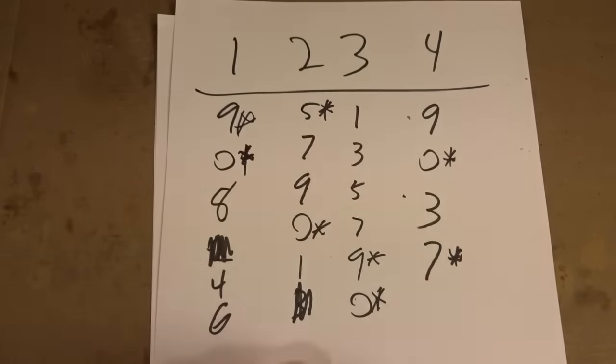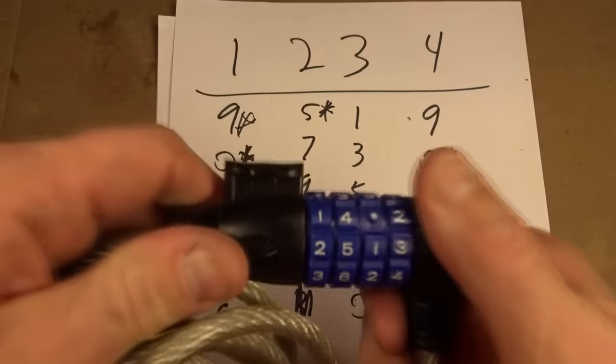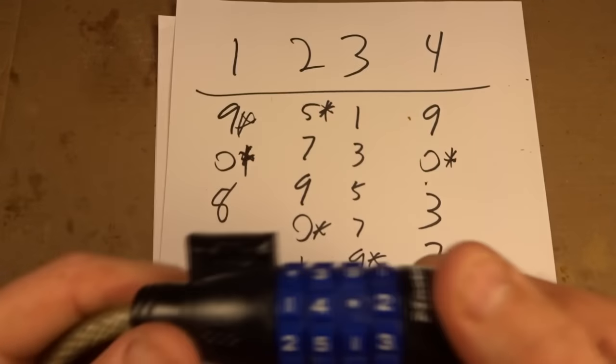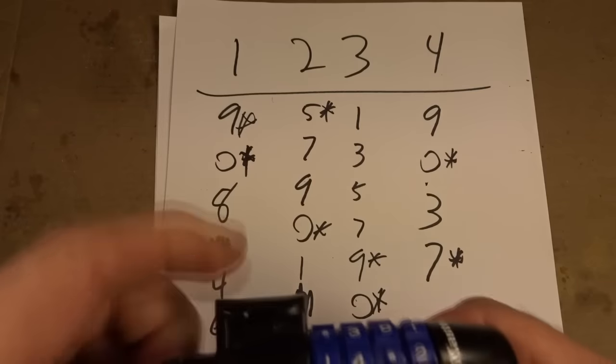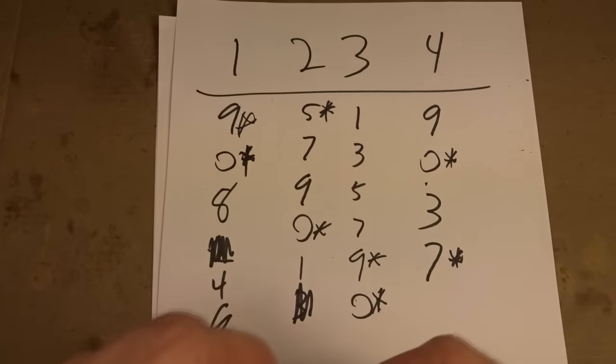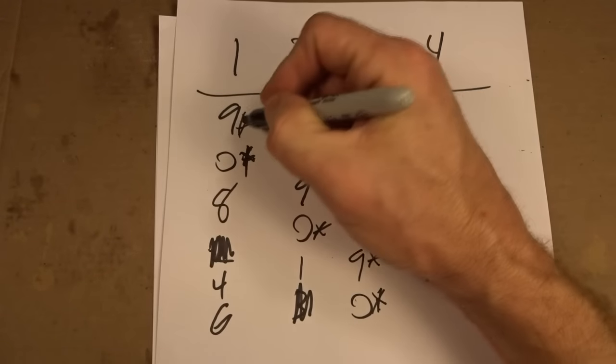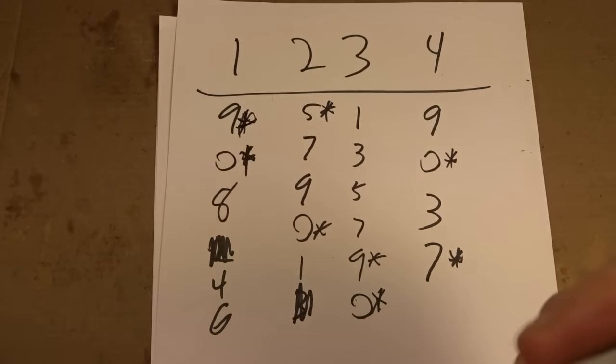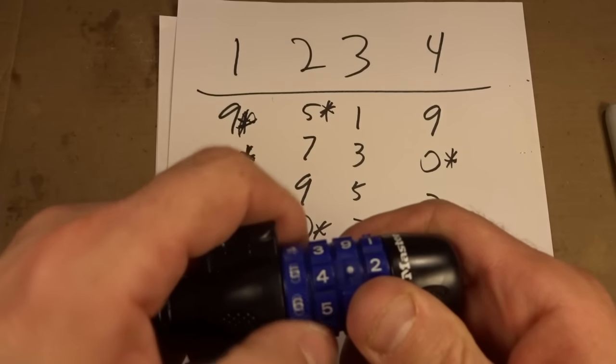Okay, so now that I've built up a list of numbers where the dials sort of catch while I'm turning them and having them under pressure there, I want to start trying combinations of these. So what I'll do is I'll set the first number here to nine. I'm going to start with the ones that have the stars next to them here first and go through those because those are the most likely ones. So I'll start with a nine in the first dial here.